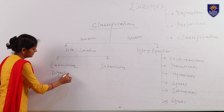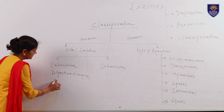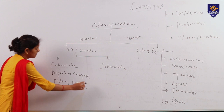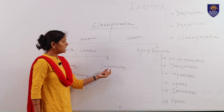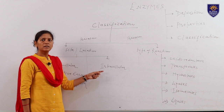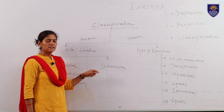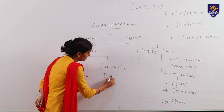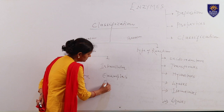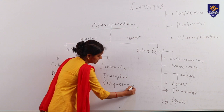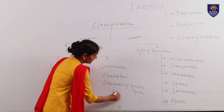Extracellular enzymes like pepsin and trypsin are examples of extracellular enzymes. Intra means inside and cellular means cell. The enzymes which perform their function within the cell from which they are produced are called intracellular enzymes, also called endoenzymes. Examples are enzymes of the Krebs cycle or glycolysis.